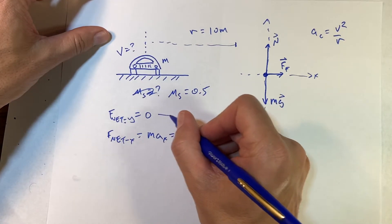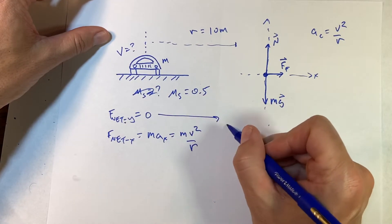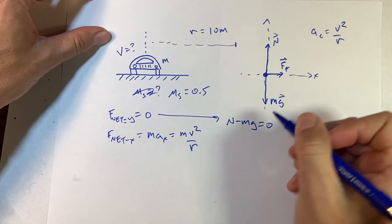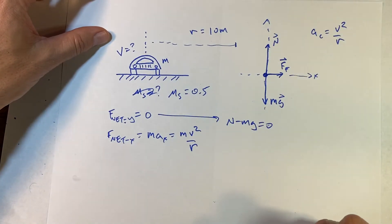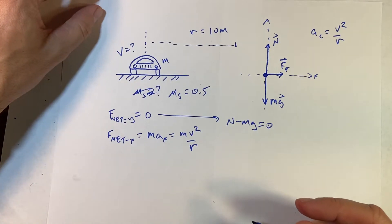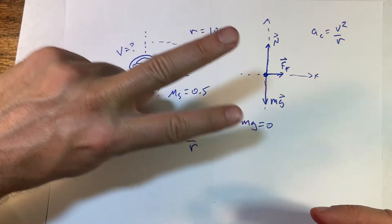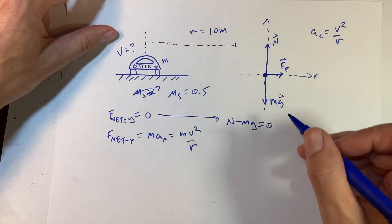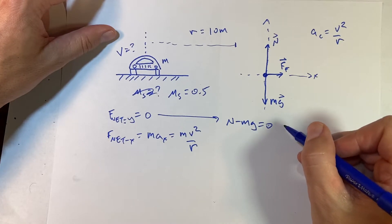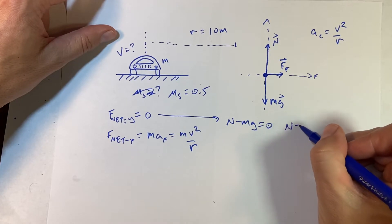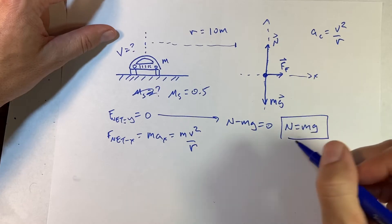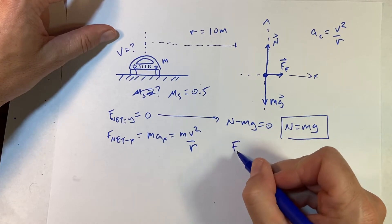Looking at the y-forces first: N minus mg equals zero — there are no components here, everything is simple. This tells me that N equals mg. You care about this because the magnitude of the friction force will be less than or equal to μ_s times the normal force.